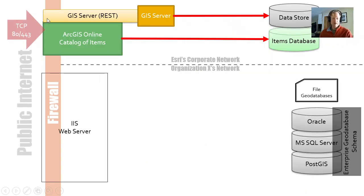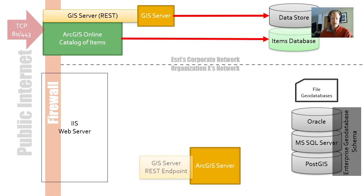Back to my diagram — you'll see I have a firewall here and a public internet. Typically you have some things inside your organization and some things facing the internet. The thing that punches through that firewall on a Windows computer is Internet Information Services, which is a web server. We have the same concept of the GIS server as part of the ArcGIS Enterprise solution, and you can see there are two components: the GIS server (the engine) and the REST endpoint (what users access). Just like in ArcGIS Online, users go through the REST endpoint into the GIS server to get at the data store.